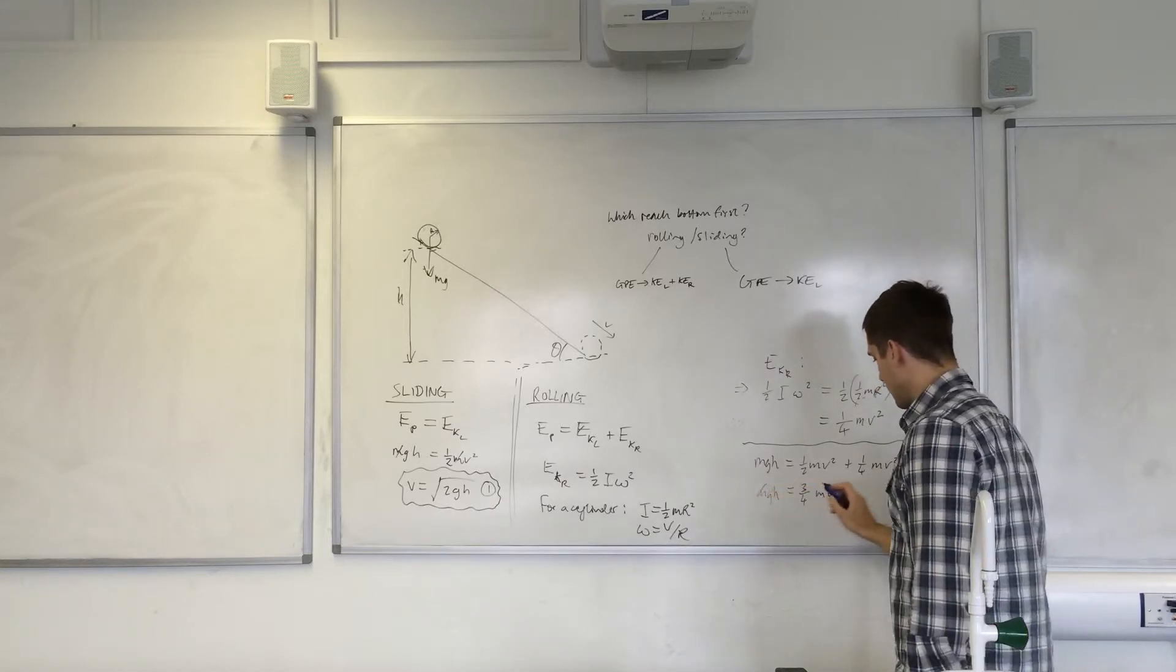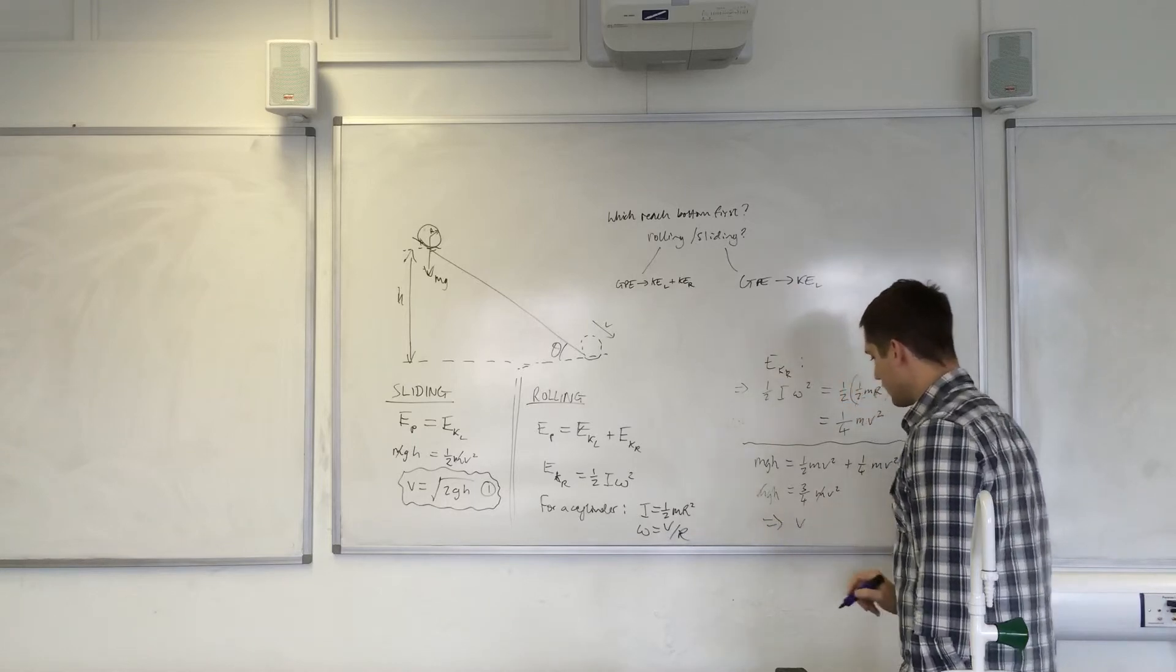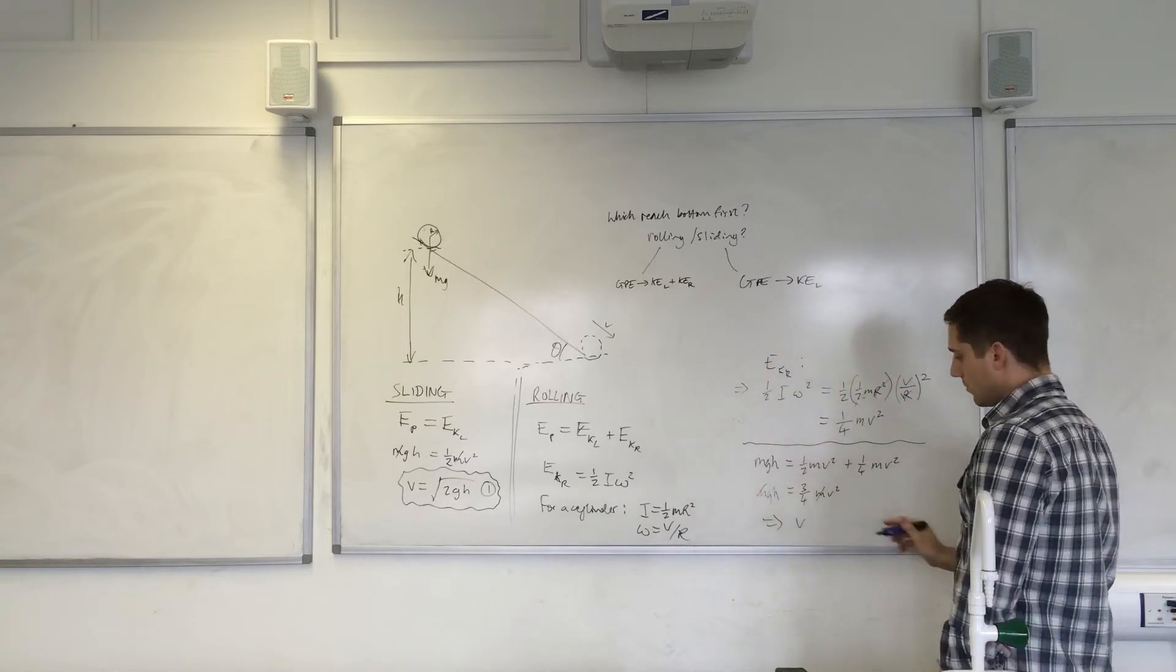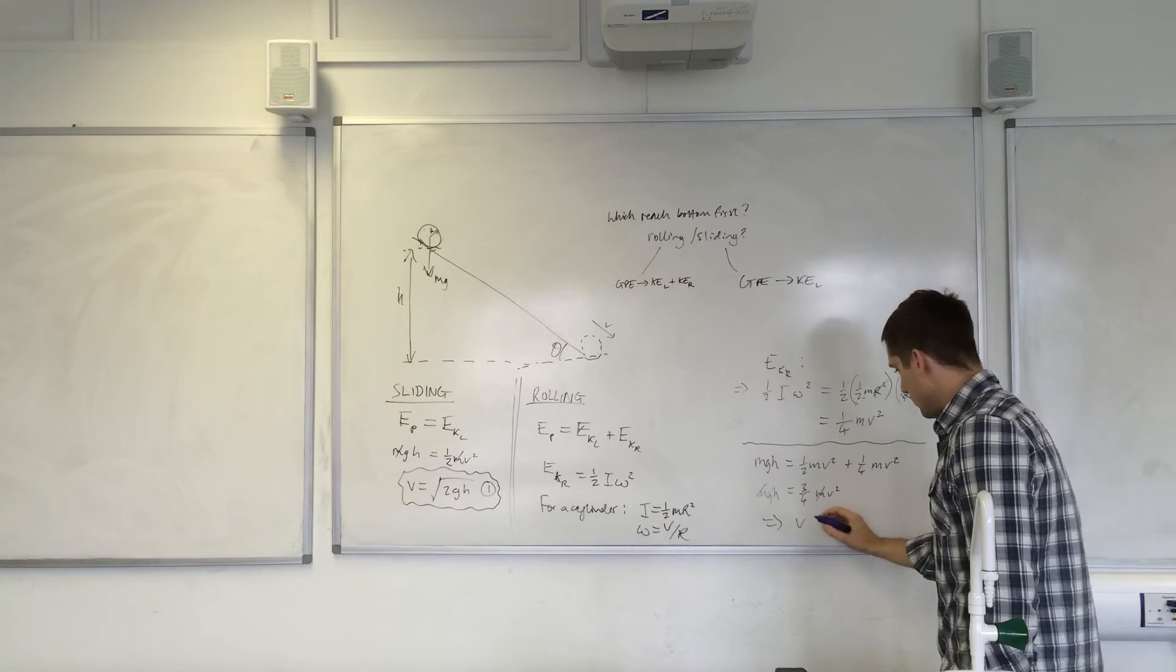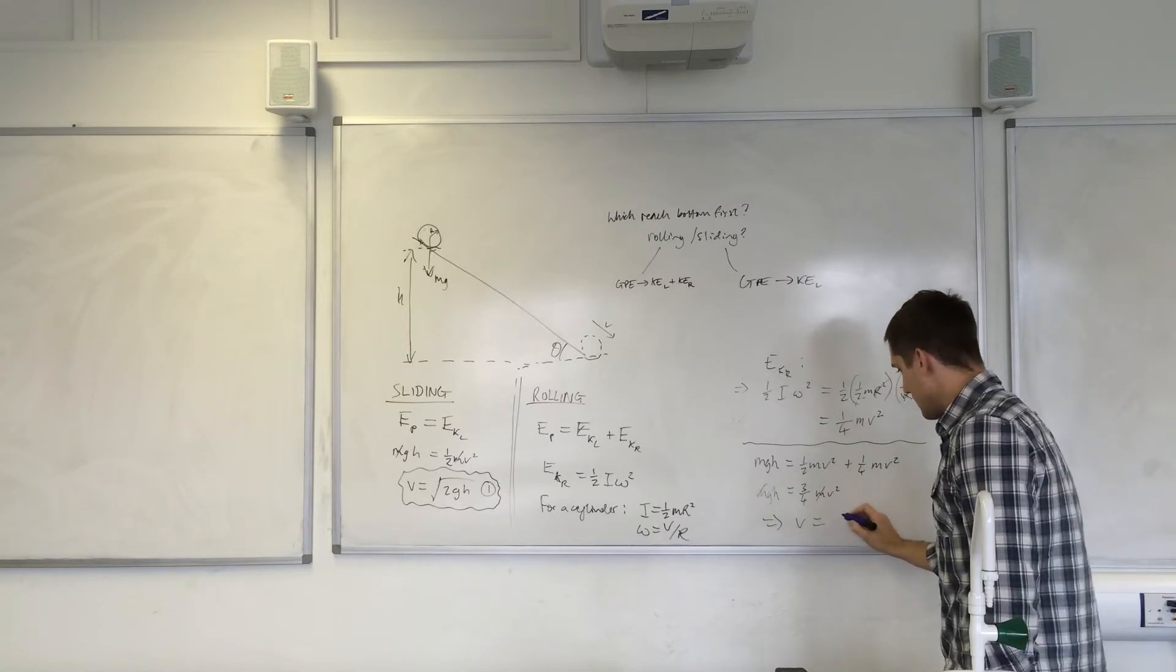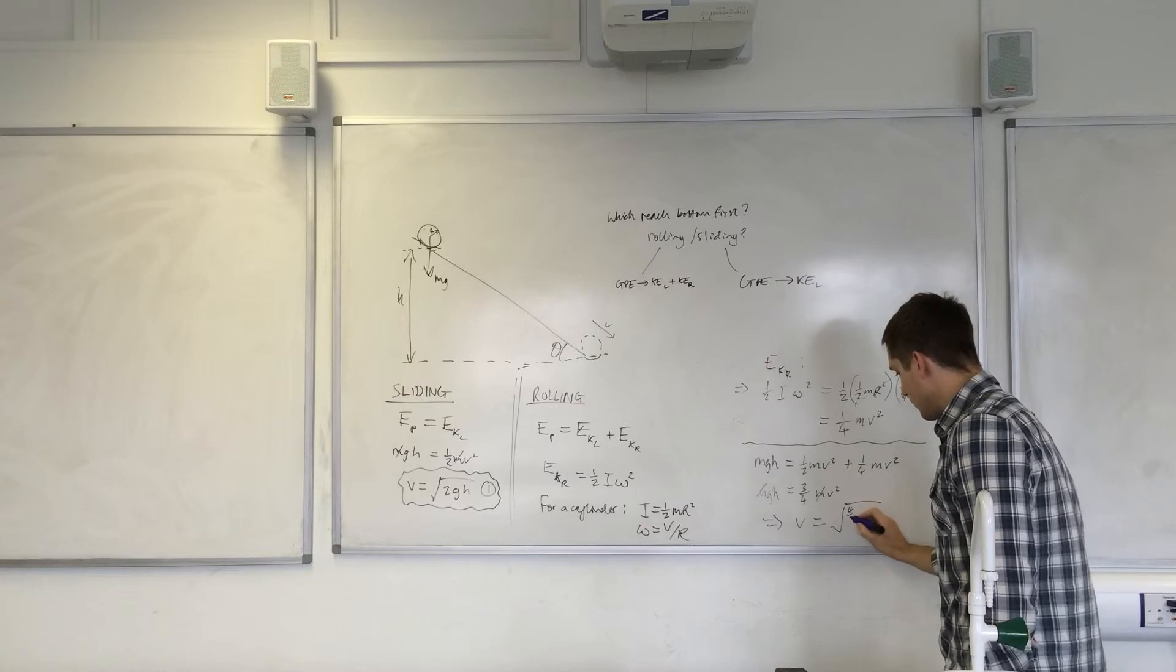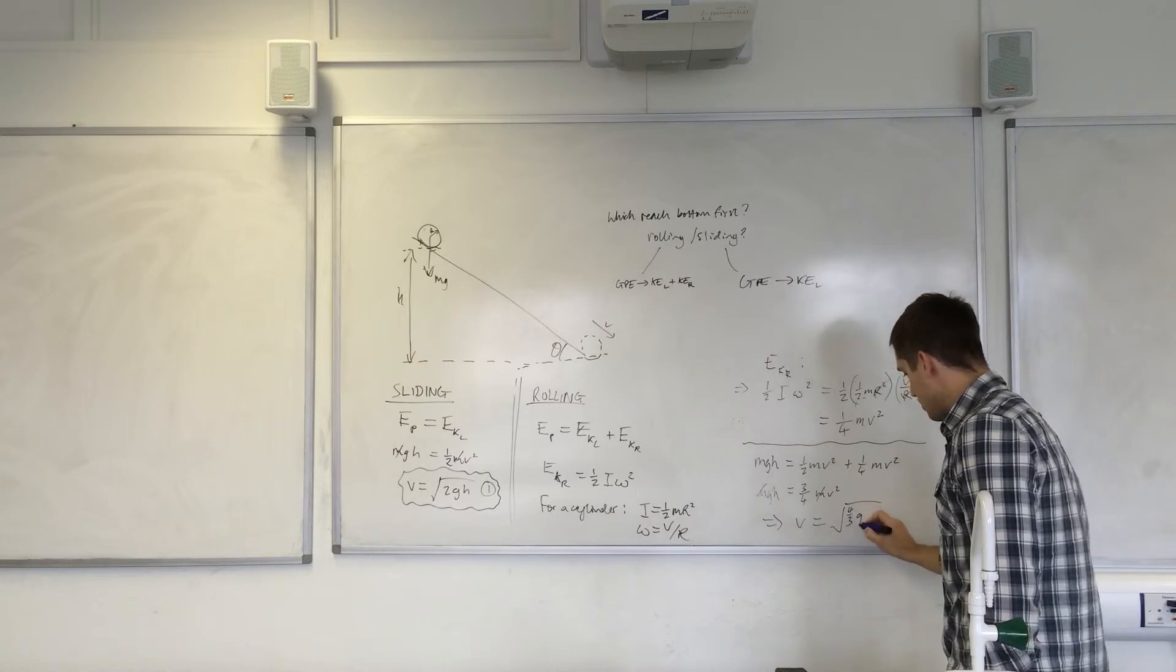And the masses cancel, so then the velocity of the object at the bottom will be equal to the square root of four-thirds gh.